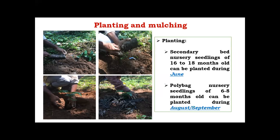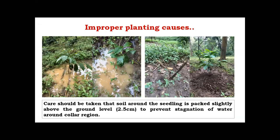Planting should not be done too deep — it should be planted just half an inch down the ground. After planting, it should be mulched properly. Improper planting causes death of coffee seedlings because the plant should be heaped with surrounding topsoil. Otherwise, water stagnation will happen, leading to suffocation and respiration problems, ultimately causing the plant to die. Therefore, it is advisable to heap the plant 1 inch or 2.5 centimeters above ground level to prevent water stagnation at the collar region.